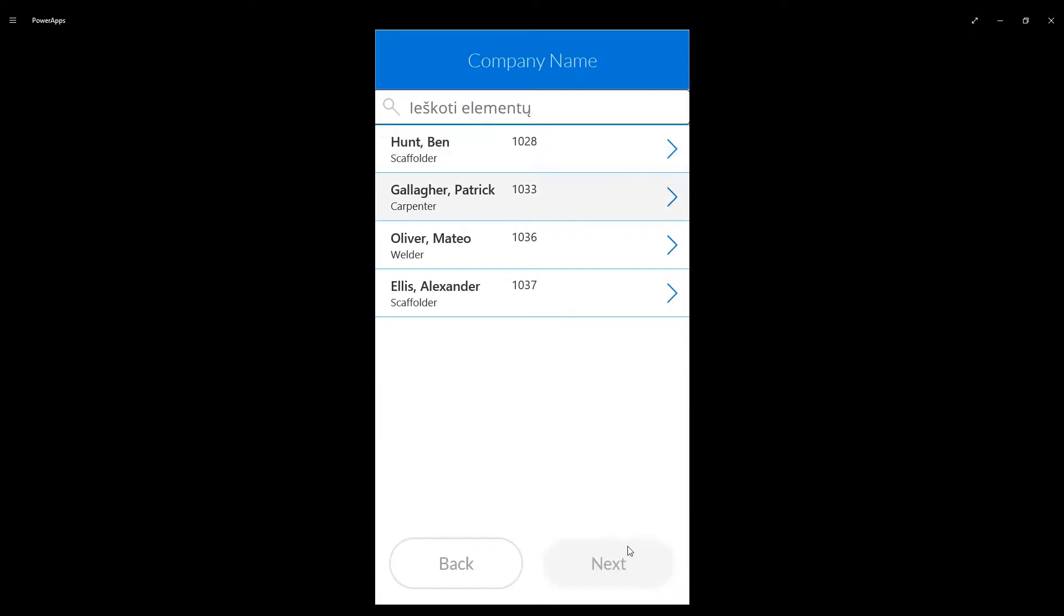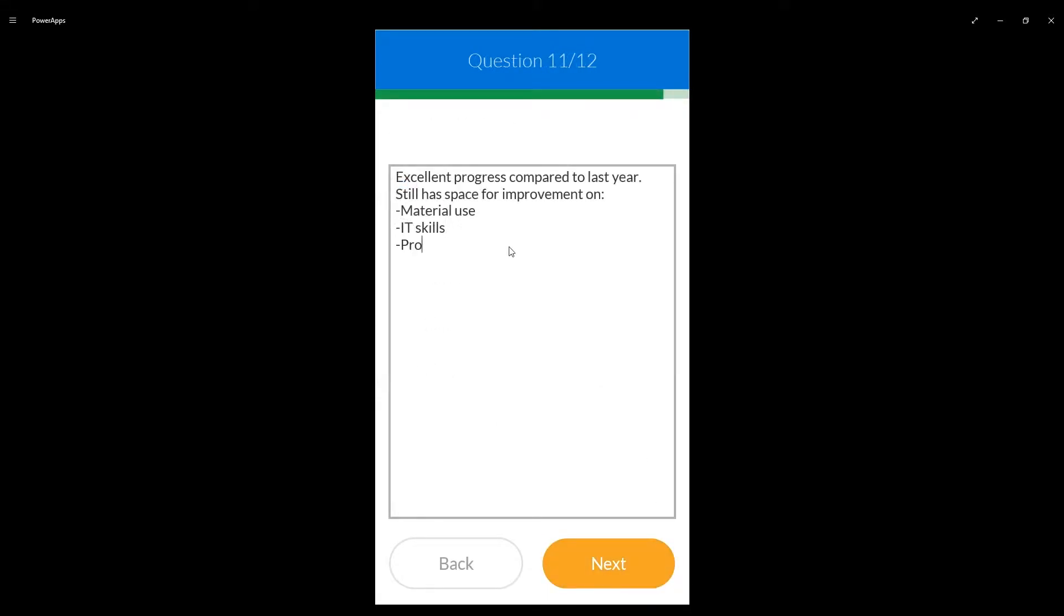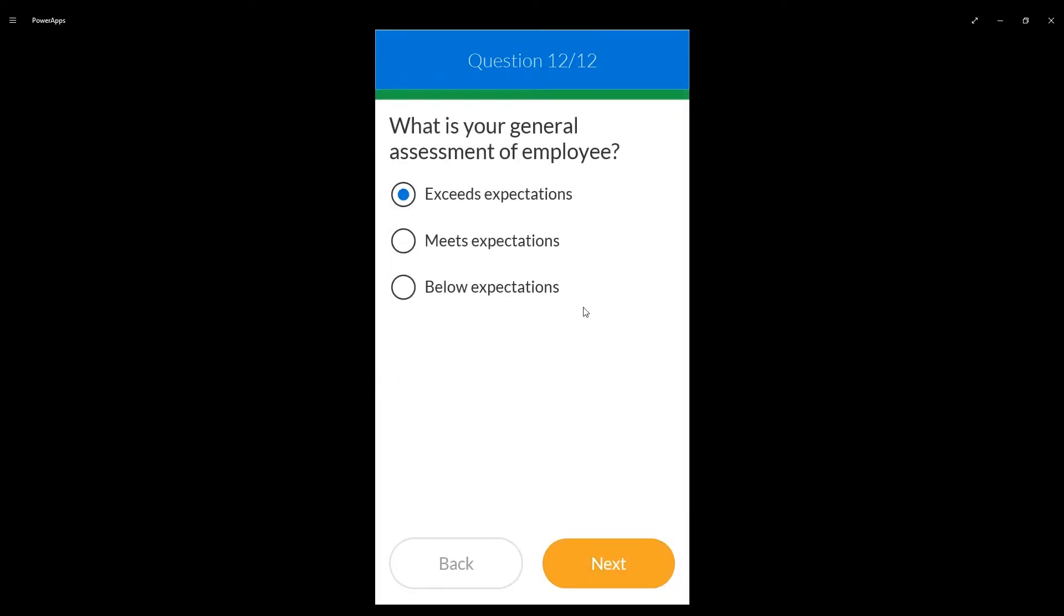Now the project manager simply selects an employee from his list and rates each question according to predefined criteria. He can also add a comment if necessary. At the end of this survey there is a possibility to suggest an employee for promotion or whether he should be kept at the same category.